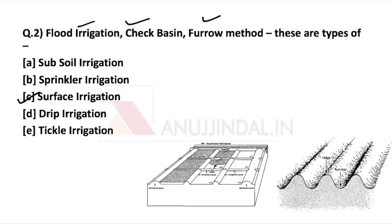Flood irrigation is known as uncontrolled flooding. What happens in uncontrolled flooding is that water is applied to the cropland without any preparation of the land. Where the area or topography is irregular, the surface is irregular, and the availability of water is more, we use this flood irrigation method. Without any restrictions or guidance, the water flows — that is known as flood irrigation. As the name suggests, uncontrolled flooding is the core of flood irrigation.